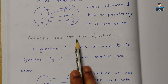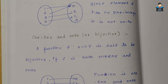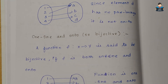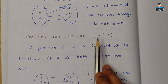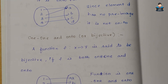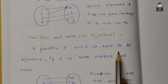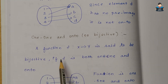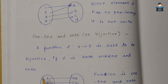Next is 1-to-1 and onto. If both 2 conditions are satisfied, that is called bijective. Function f from X to Y is said to be bijective if f is both one-to-one and onto.